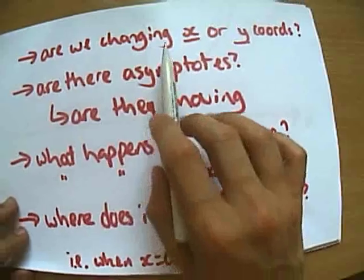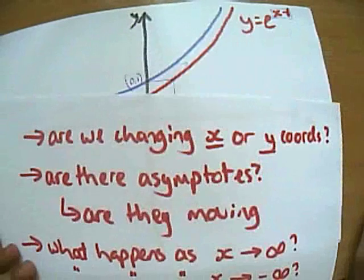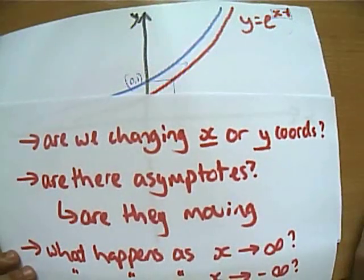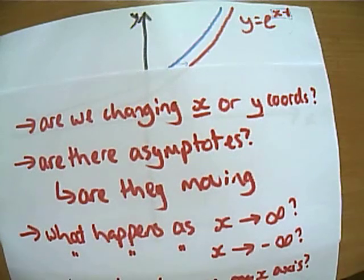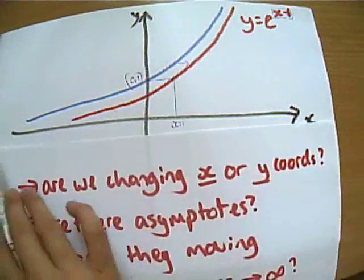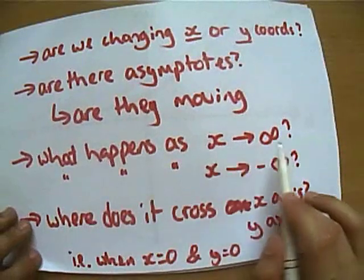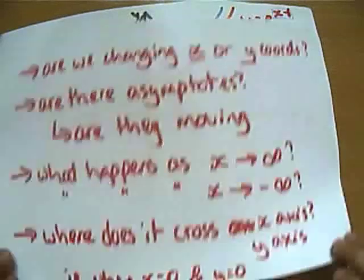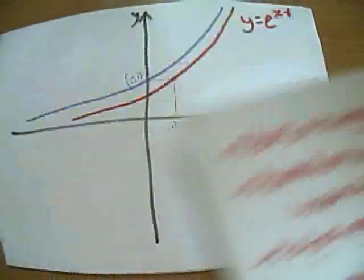So let's come back to that quick handy checklist. Are we changing the x or the y-coordinates? Well in this case, we are changing... Do you know I'm now hesitating, I'm having one of those moments where I'm not really confident that I'm explaining it brilliantly. We're going to go with that for now. Are there any asymptotes? Yes. Are we changing them? No. We're just shifting everything one place to the right. What happens as x tends towards infinity and minus infinity? Yes, we've talked about that. And where does it cross the x-axis or the y-axis? That's the final thing we need to think about here.